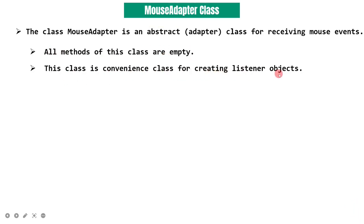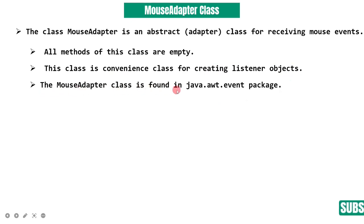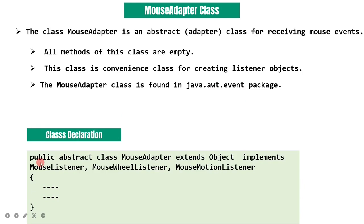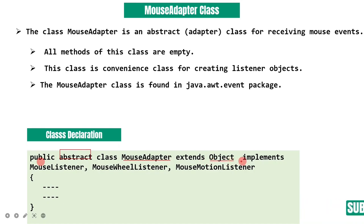The MouseAdapter class is a convenience class for creating listener objects. It is found in the java.awt.event package. It is a predefined class. The class declaration is: public abstract class MouseAdapter, which extends Object.